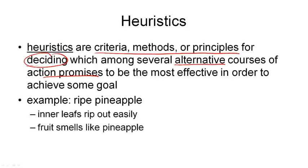And what we need to do is we need to decide which one to follow first. Of course, we keep in mind the others and follow those later. We use heuristics in everyday life. For example, here you see a heuristic for deciding whether a pineapple is ripe. If you ever go into a shop and want to buy a ripe pineapple,